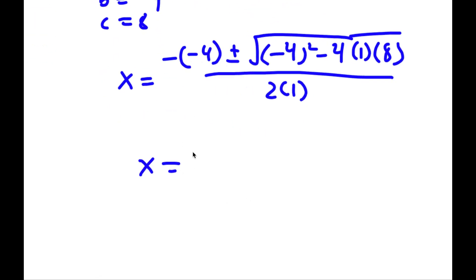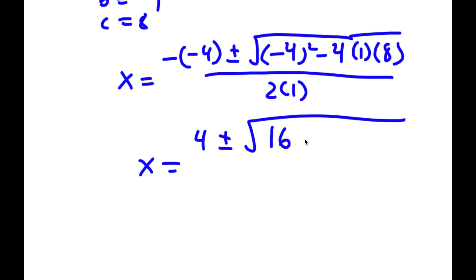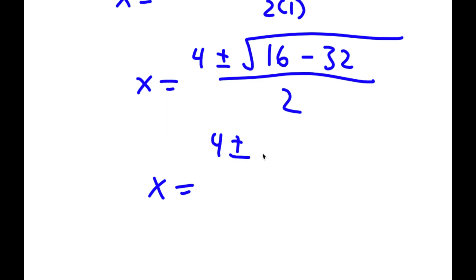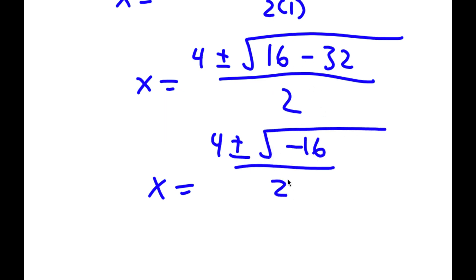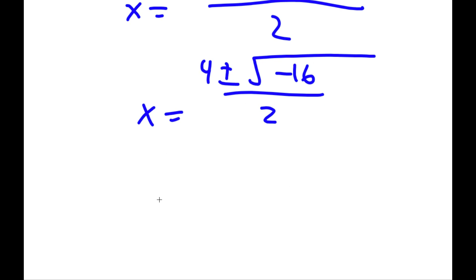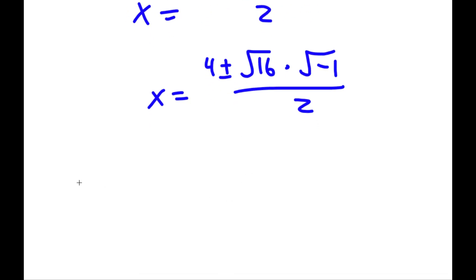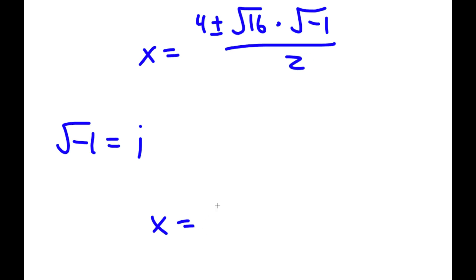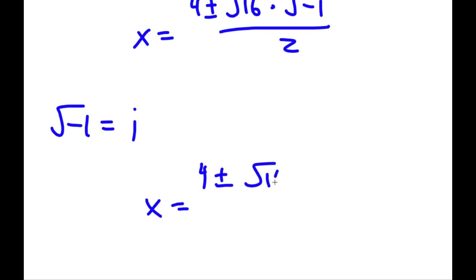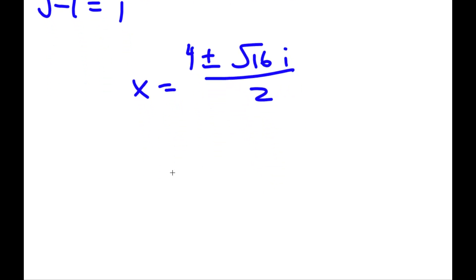Simplifying: negative of negative 4 is positive 4. Then (negative 4)² is positive 16, and 4 times 1 times 8 is 32, so under the square root we have 16 minus 32 equals negative 16, all over 2. We can rewrite the square root of negative 16 as the square root of positive 16 times the square root of negative 1. Since the square root of negative 1 equals the imaginary number i, we get 4 plus or minus the square root of 16 times i over 2, which is 4 plus or minus 4i over 2.